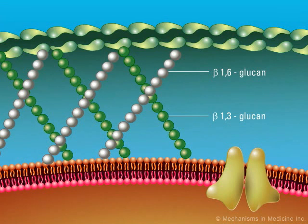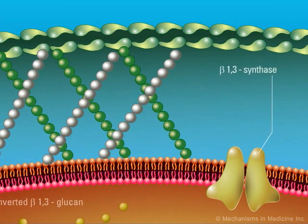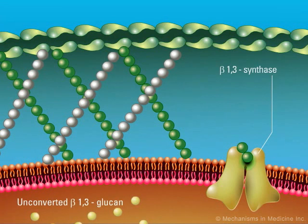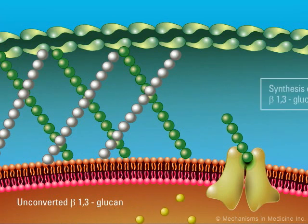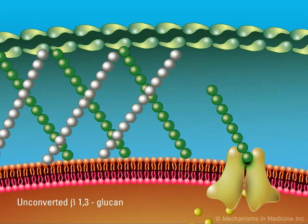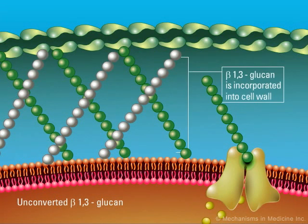A glucan synthase complex located in the fungal cell membrane is responsible for beta-1,3 glucan synthesis. This occurs on the cytoplasmic side of the fungal membrane. Glucan chains extrude from the glucan synthase complex into the periplasmic space, where they are then incorporated into the cell wall.